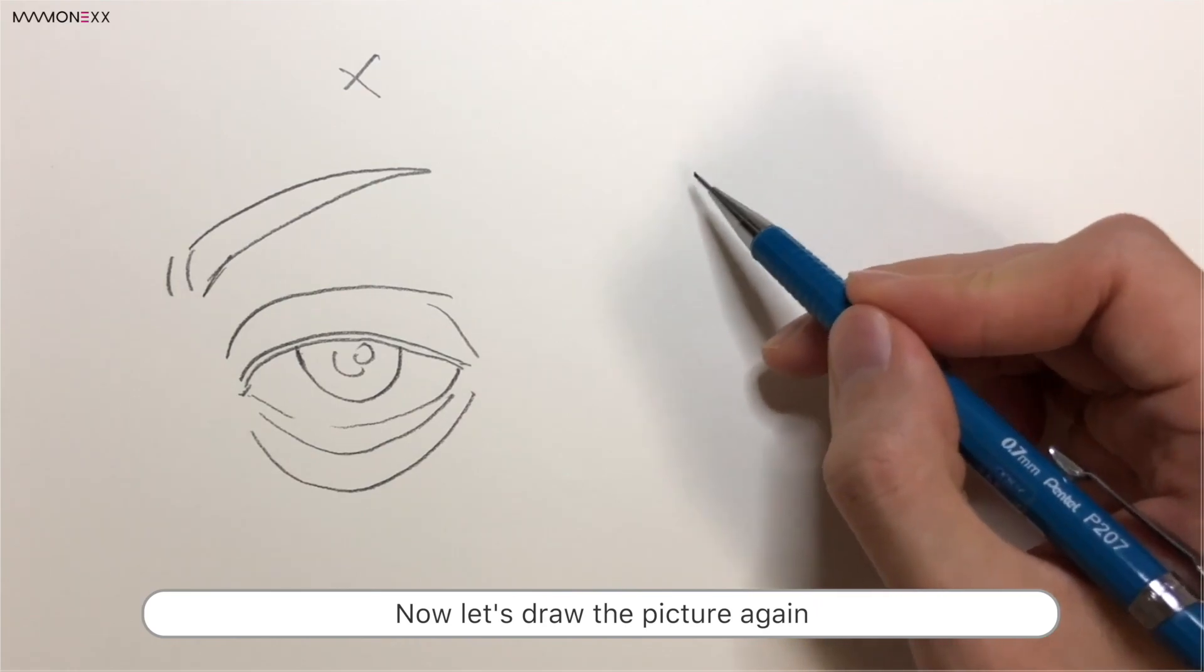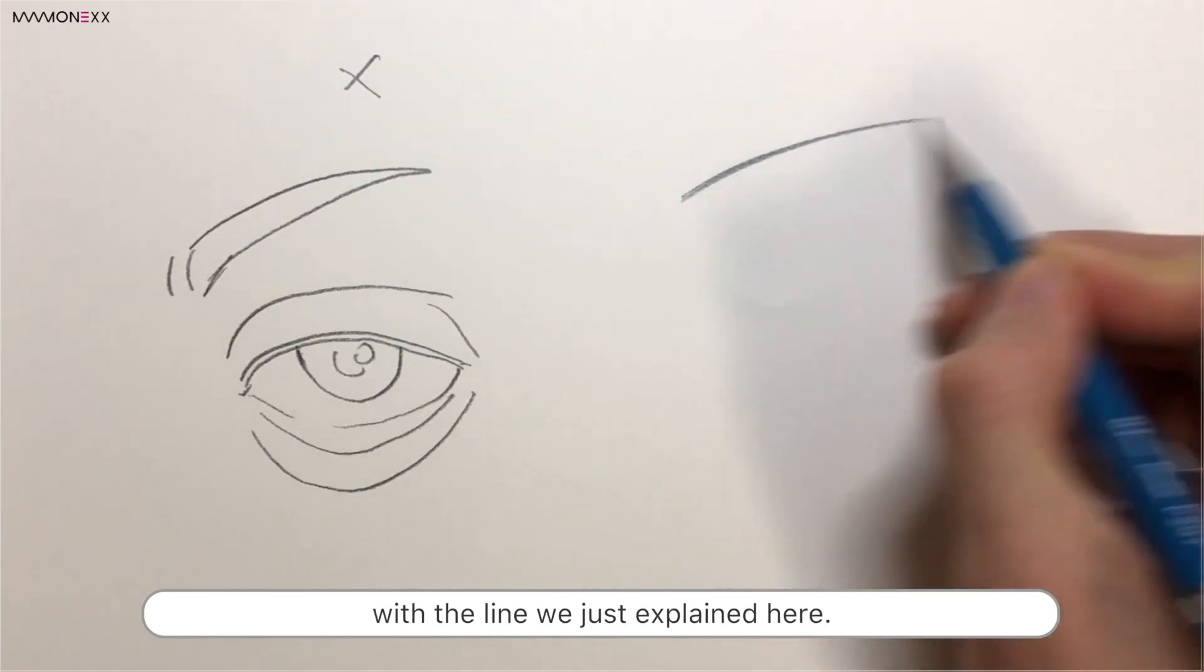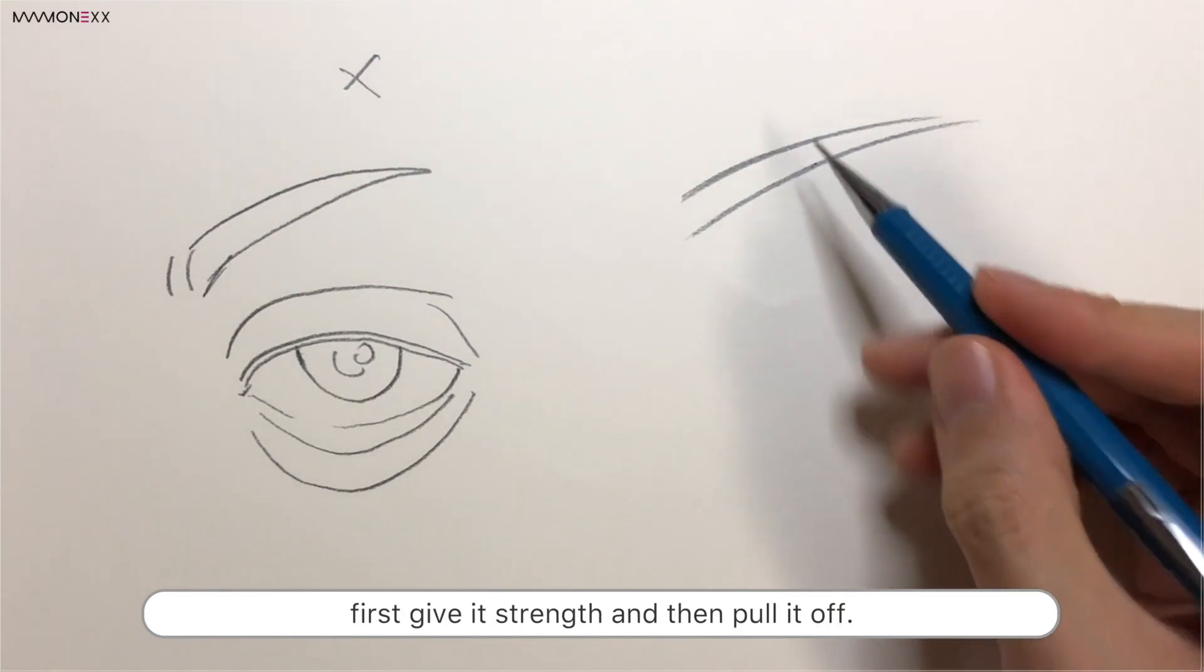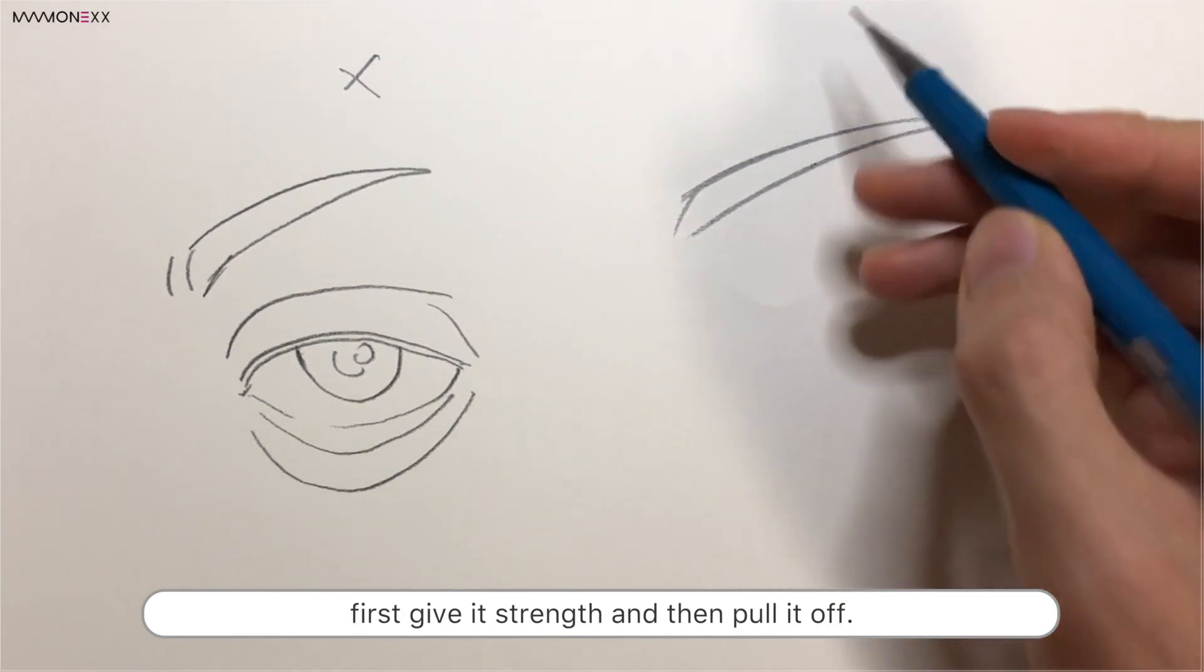Now, let's draw the picture again with the line we just explained here. When you draw a line, first give it strength and then pull it off.